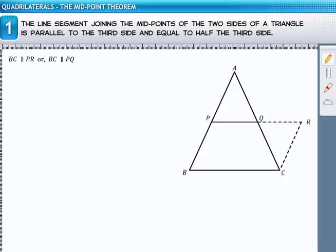Also, opposite sides of a parallelogram are equal. Therefore, PR is equal to BC. Therefore, half of PR is equal to half of BC. Or, PQ is equal to half of BC.